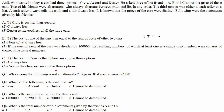Now if B is truth teller, A and C must both be alternators. But C's first statement says civic is the highest, and C's third statement says civic is the cheapest — these are contradictory, so both cannot be true simultaneously. For C as alternator (F-T-F), the second statement must be true: 'A always lies.' But if A always lies, B's statement 'none of us always lies' is contradicted. So the case where B is a truth teller is eliminated.